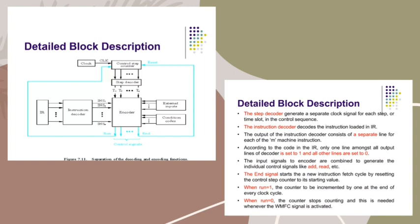According to the code in the IR, only one line among all output lines of the decoder is set to 1 and all other lines are set to 0. The input signals to the encoder are combined to generate individual control signals like add, read, etc. The end signal starts the new instruction fetch cycle by resetting the control step counter to its starting value.